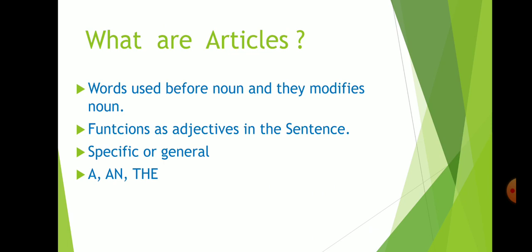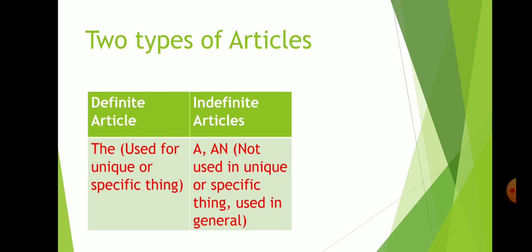Now, specific or general articles decide whether a noun is used as specific context or general context. There are three articles in English: a, an, and the.